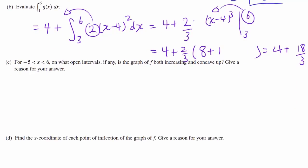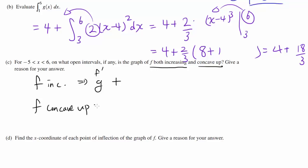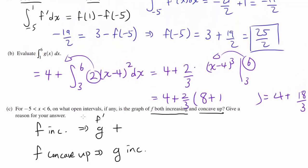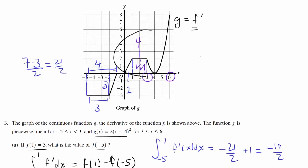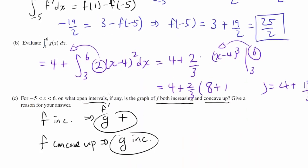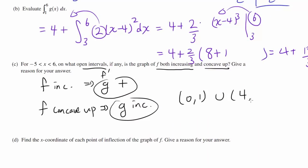Part C: for x between negative 5 and 6, on what intervals is the graph of f both increasing and concave up? If f is increasing, that means g, which is f prime, has to be positive. For f to be concave up, g has to be increasing. So we want the open intervals where g is positive and increasing. g is positive from 0 to 6, and g is increasing from 0 to 1 and from 4 to 6. So the answer is (0, 1) and (4, 6).